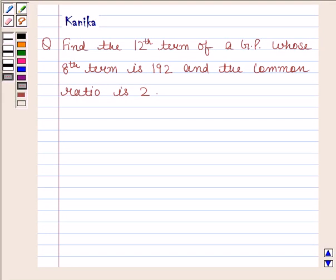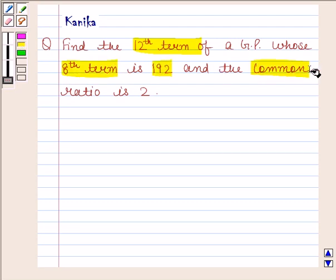Hi and welcome to the session. I'm Kanika and I'm going to help you solve the following question. The question says find the 12th term of a geometric progression whose 8th term is 192 and the common ratio is 2.